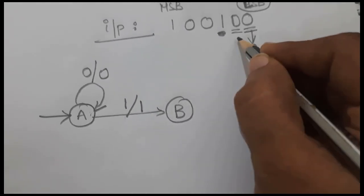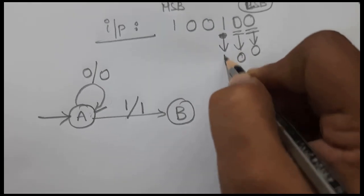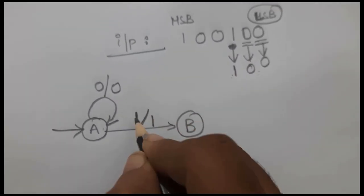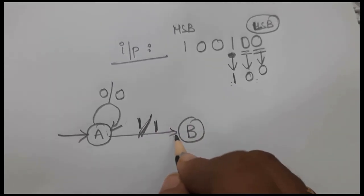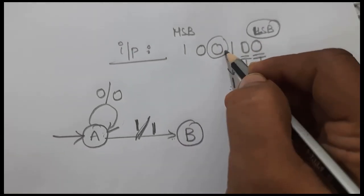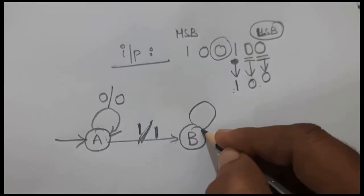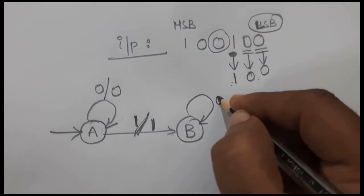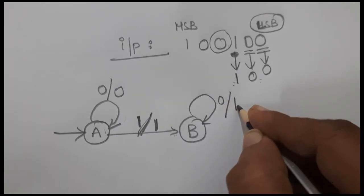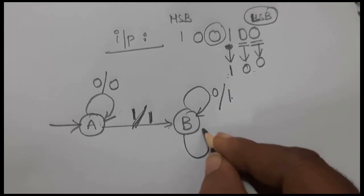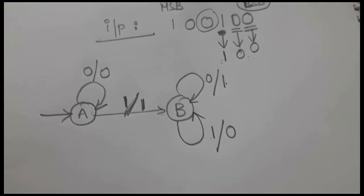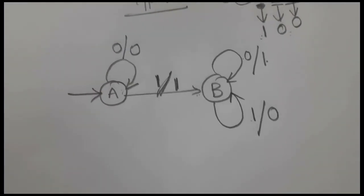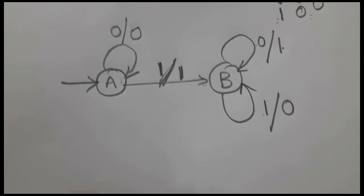Once we are at state B, after the first 1, whatever digits arrive must be complemented. If 0 is the input at state B, it should be complemented to output 1. If 1 is the input at state B, it should also be complemented, so the output should be 0. State B stays at state B for both 0 and 1 inputs. This is our Mealy FSM to get the 2's complement of any given binary digit.